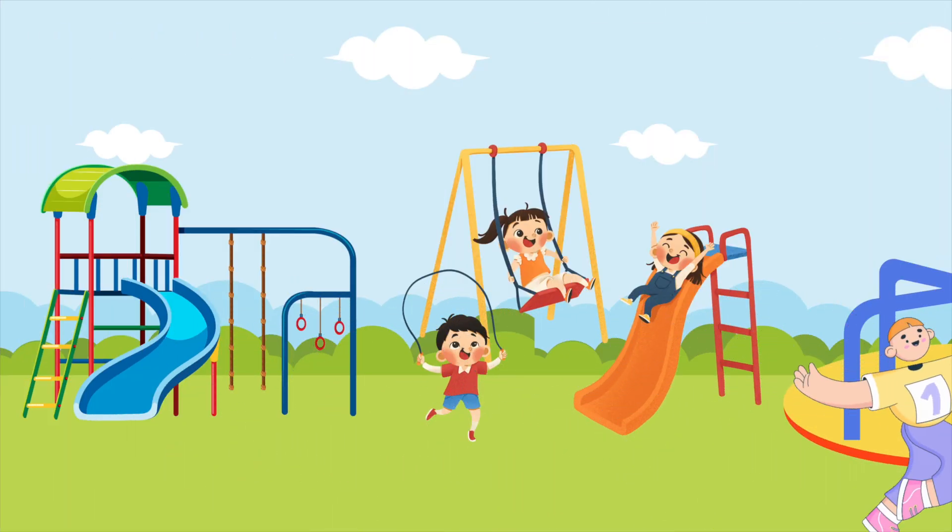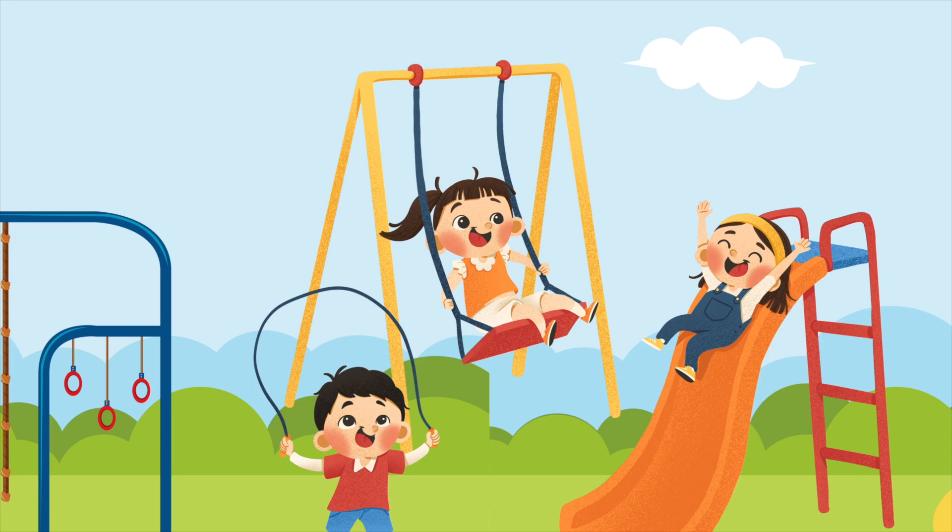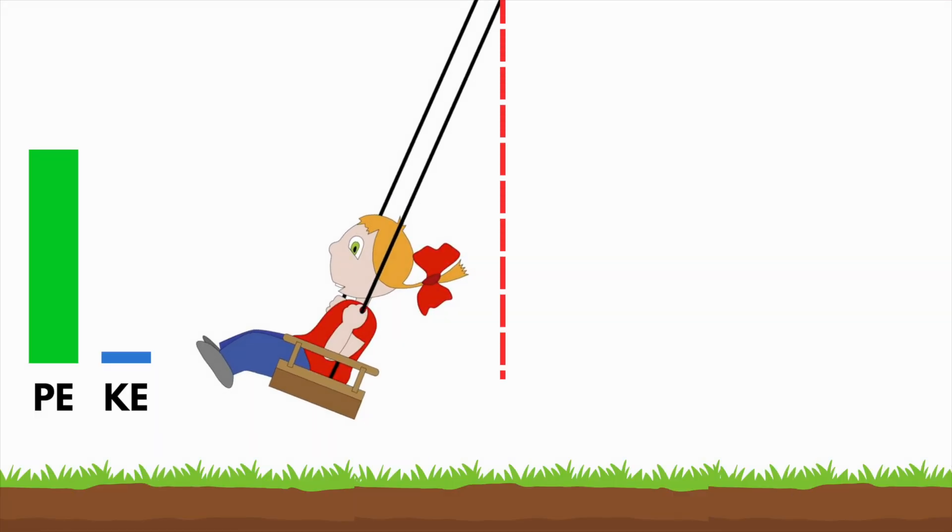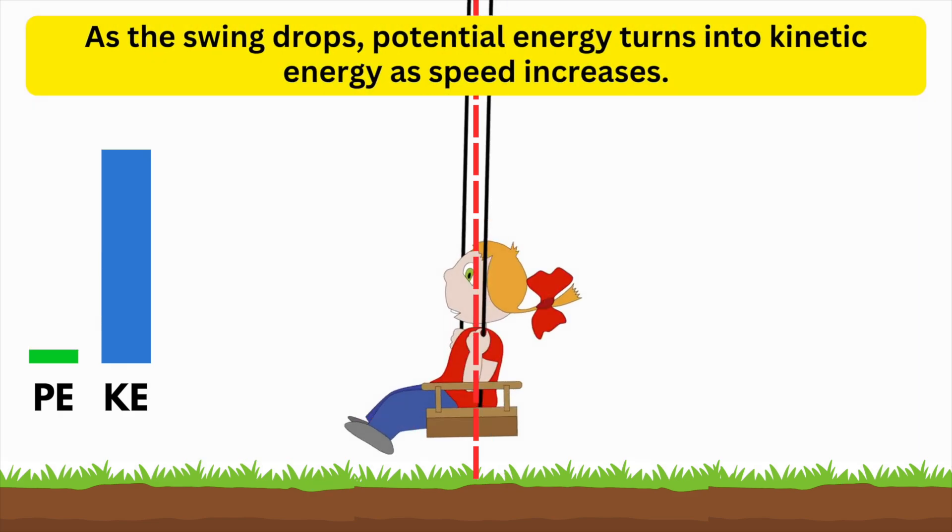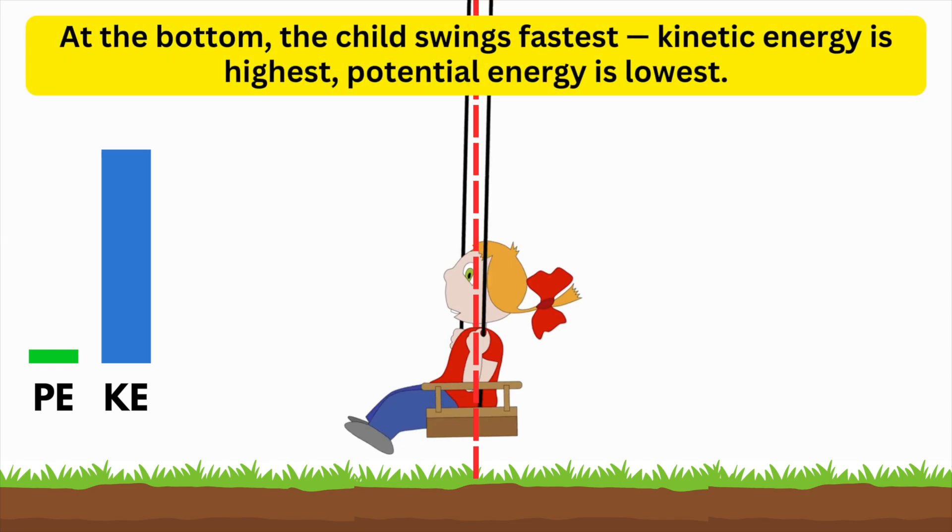Now picture a child on a swing. At the highest point of the swing the child momentarily pauses, not moving but full of potential energy because of the height. As the swing drops down and picks up speed that potential energy transforms into kinetic energy. At the bottom of the swing the child is moving the fastest with maximum kinetic energy and minimum potential energy.